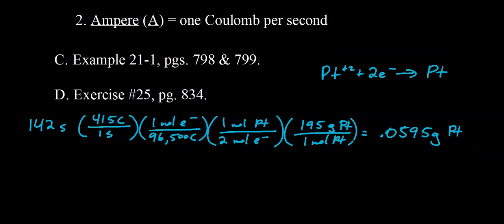All right, here's the setup for that one. Again, we have platinum 2 ions being reduced to platinum metal. So be careful with the number of moles of electrons. So two moles of electrons gained for every one mole of platinum metal that forms. Ultimately, we get 0.0595 grams.